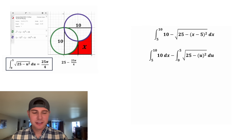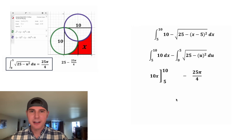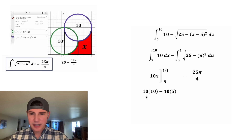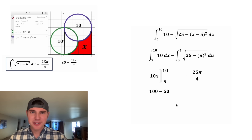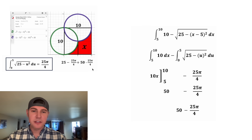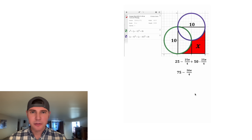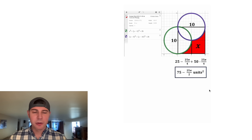After substitution we have two clean integrals. Using our boxed result, the square root integral equals 25 pi over 4, which is subtracted. For the other integral, the antiderivative of 10 is 10x evaluated from 5 to 10: 10 times 10 minus 10 times 5 equals 100 minus 50 equals 50. So the second region's area is 50 minus 25 pi over 4. Combining both regions: 25 plus 50 is 75, and negative 25 pi over 4 minus 25 pi over 4 is negative 50 pi over 4, which simplifies to negative 25 pi over 2. The total area is 75 minus 25 pi over 2 units squared.